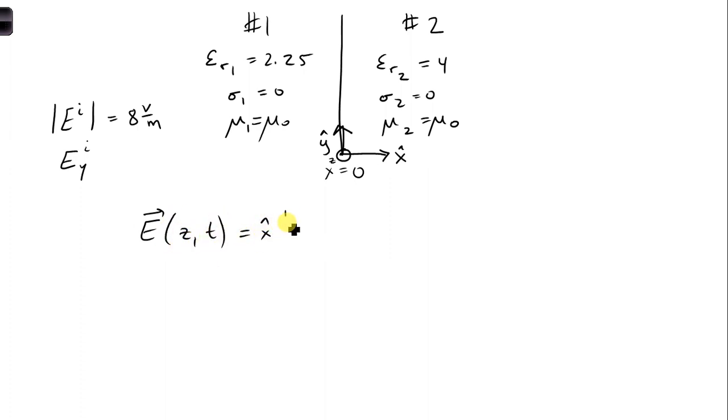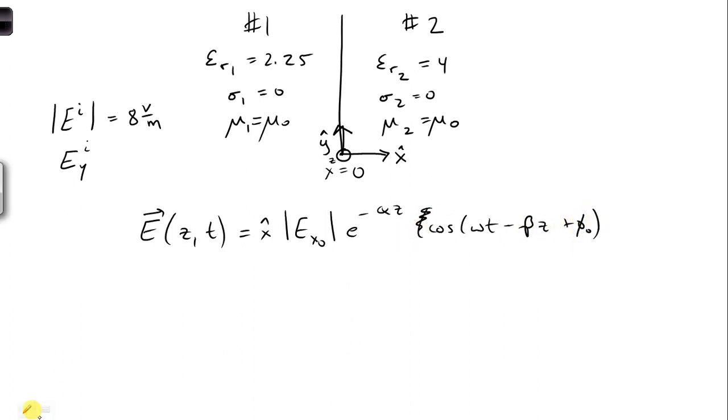But this is for a very specific geometry. So this assumes, let me finish writing this. This assumes that the wave is propagating in the z direction. You can see that here. And that the electric field is oriented in the x hat direction. So we're going to have to adjust this general form that was provided for our particular scenario.